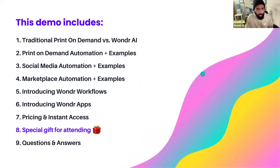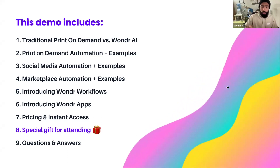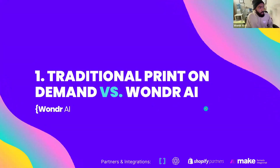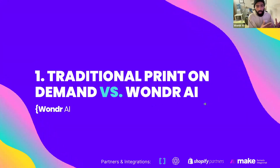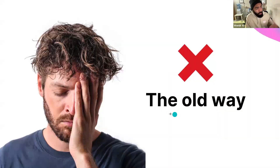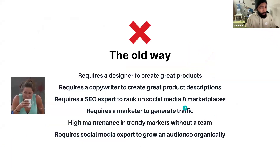We're going to talk about how the system works, how the automation platform works, and how you can get your own designs and products on your websites. Let's talk about traditional print-on-demand — how people normally conduct business the old way. This is my friend Bruce. As you can see, Bruce is very frustrated. He wanted some type of passive income stream but quickly realized all that's involved, and that part-time passive income really turns into a full-time thing.